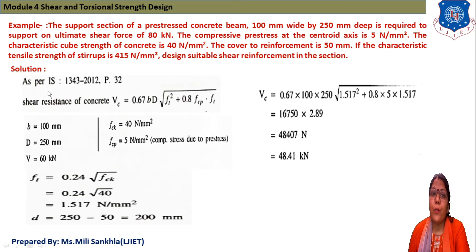According to IS 1343:2012, page 32, shear resistance of concrete Vc = 0.67bd√(ft² + 0.8fcp·ft). fck is given in data, that is 40 N/mm².